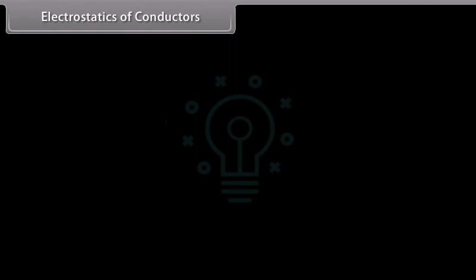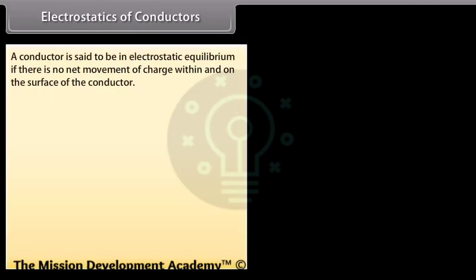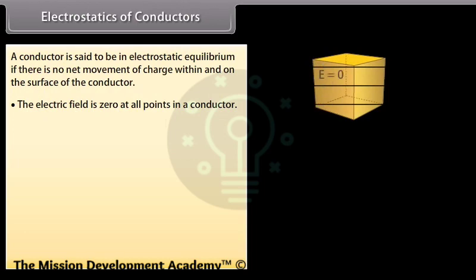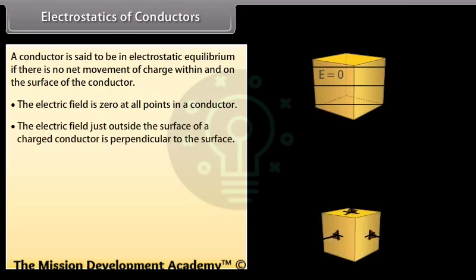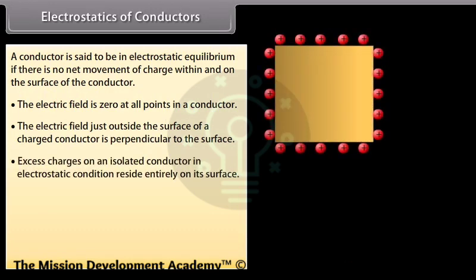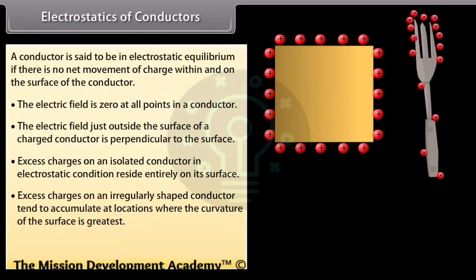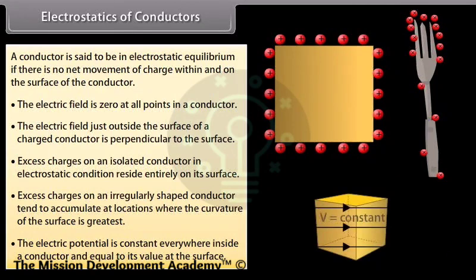Electrostatics of conductors: A conductor is in electrostatic equilibrium if there is no net movement of charge within or on its surface. The electric field is zero at all points inside a conductor. The electric field just outside a charged conductor is perpendicular to the surface. Excess charges reside entirely on the surface of an isolated conductor. On an irregularly shaped conductor, excess charges accumulate where the surface curvature is greatest. The electric potential is constant everywhere inside a conductor and equal to its value at the surface.